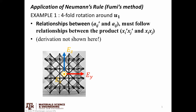Howdy. The final thing we want to do is show a different way to apply Neumann's rule. This approach is called Fumi's method. In some cases, it might be a little bit easier approach, an easier way to think about the problem.